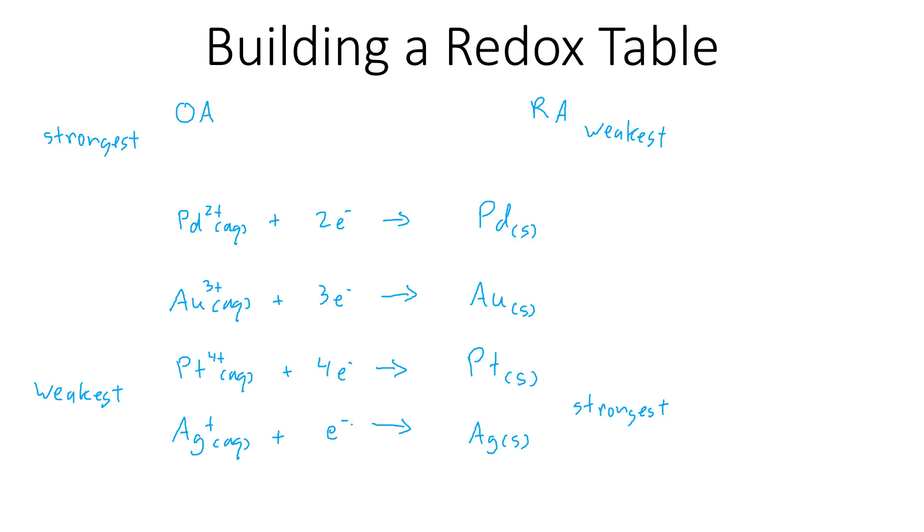And congratulations, you have just built—okay, you didn't do anything, I did it—I have just built a redox table based on these four metals. Now you could actually look up two of them on the table in your data booklet: this guy and this guy. And they're consistent. You'll have to take my word for it...